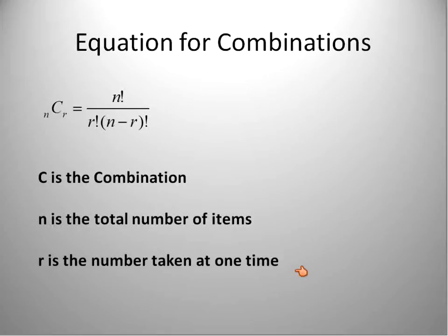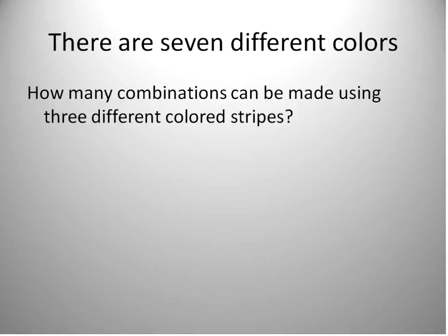So let's go ahead and take a look at the examples using colors. There are seven different colors. How many combinations can be made using three different colored stripes? So if we're making a flag or something, again, the color order doesn't matter. So how many different combinations could we make of three different colors?